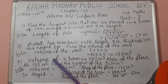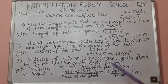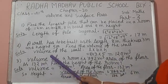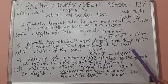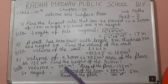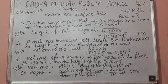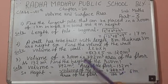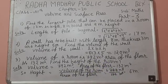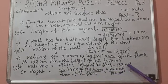Question number 3. Volume of a room is 792 meter cube and area of the floor is 132 meter square. Find the height of the room. So volume is equal to 792 meter cube and area is equal to 132 meter square. The height formula is volume of the room divided by area of the floor, that means 792 meter cube divided by 132 meter square.